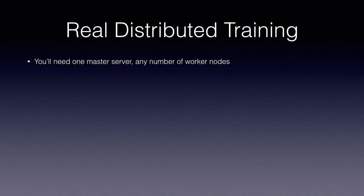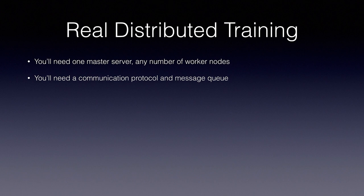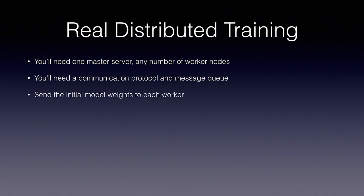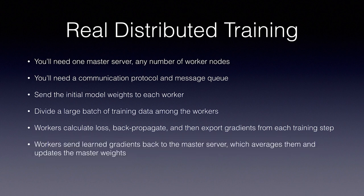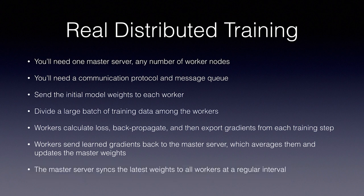You'll need one master parameter server and any number of worker nodes. You'll need a communication protocol and messaging queue to pass data back and forth. PyTorch and TensorFlow each have their own implementations of this. First, send the initial model weights to each worker. Then, divide a large batch of training data up among the workers. Workers then calculate the loss, backpropagate, and export the gradients from each training step. To improve efficiency, workers can even run several training steps, accumulating the gradients from each step. When training is complete, workers send learned gradients back to the master parameter server, which averages them and updates the weights using the selected optimizer algorithms, such as Adam, RMSProp, etc. Finally, the parameter server syncs the latest weights to all the workers at a regular interval, and the training loop continues.